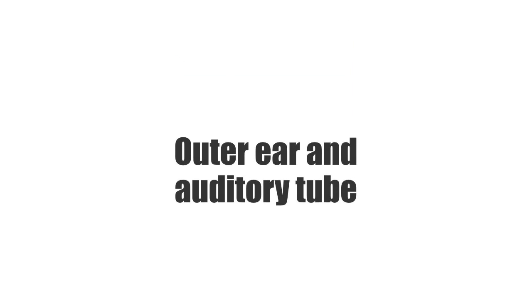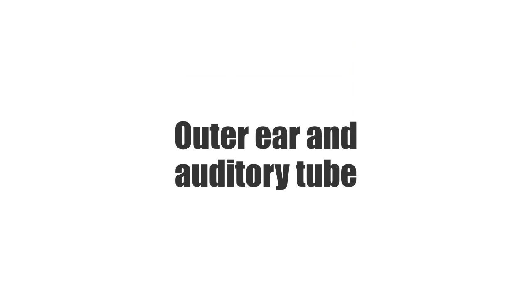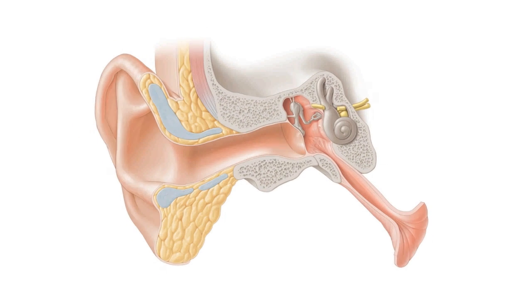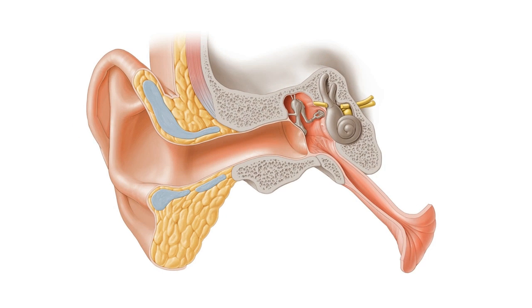Hello everyone, this is João from Kenhub and welcome to another anatomy tutorial. Today we're going to be looking at the structures of the outer ear and the auditory tube, as well as other important surrounding structures of the middle ear and inner ear, like you see here on this image.